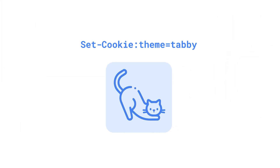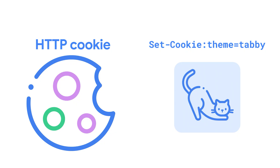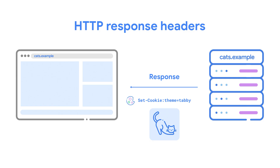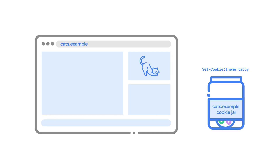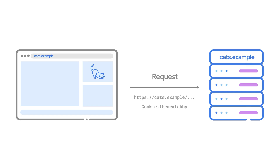This is where cookies come in. A set-cookie header included with a response tells your browser to store some text — a name and a value — known as an HTTP cookie. By design, to keep communication simple and efficient, HTTP is stateless, meaning every time you open a web page, the website has no way of knowing if you're the same person who visited previously. Cookies were invented to solve that problem. In response to the request for cats.example/images/cat.jpg, the cats.example server includes the header: set cookie theme equals tabby, instructing the browser to store a cookie named theme with the value tabby.